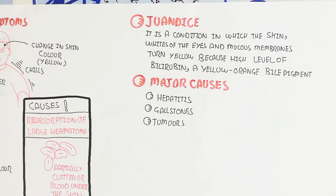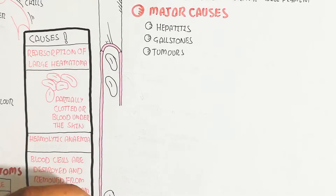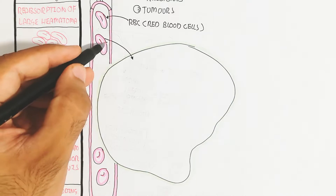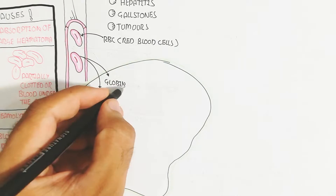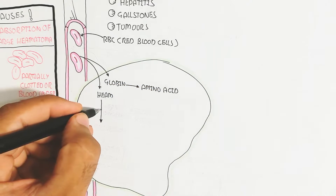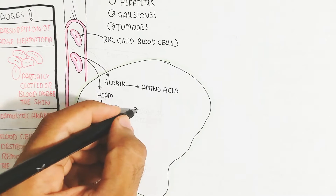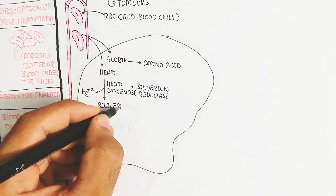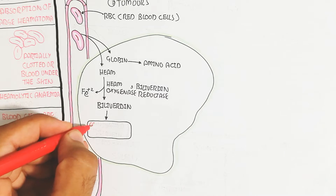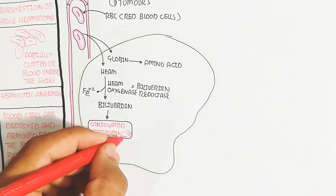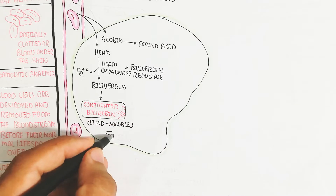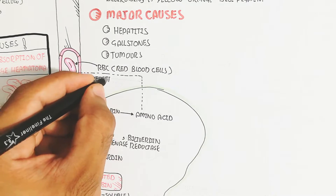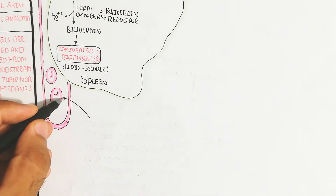Now let's discuss the pathophysiology. The blood circulatory system contains RBCs. These RBCs enter the spleen and convert into globin and heme. Heme is an iron-containing protein; globin is a globular protein that converts into amino acids. The heme oxygenase enzyme and biliverdin reductase enzyme separate the iron and produce biliverdin, which forms unconjugated bilirubin — a lipid-soluble product that enters the blood circulatory system.